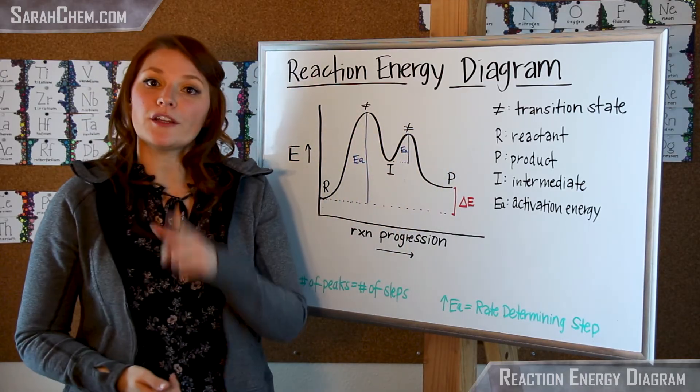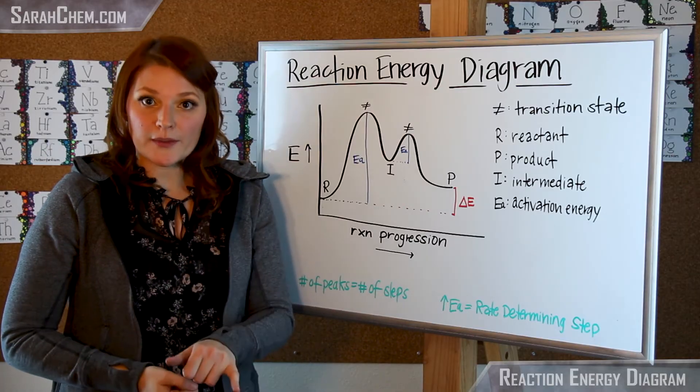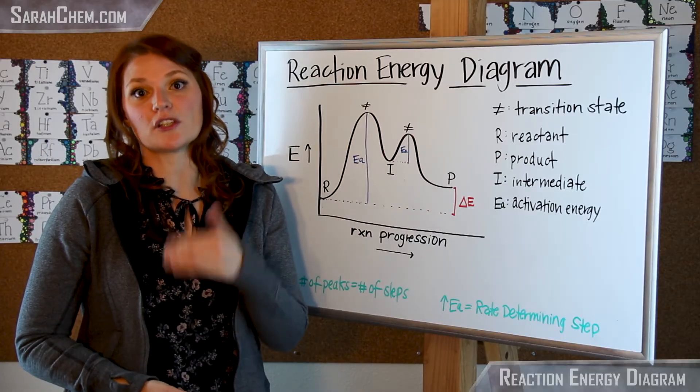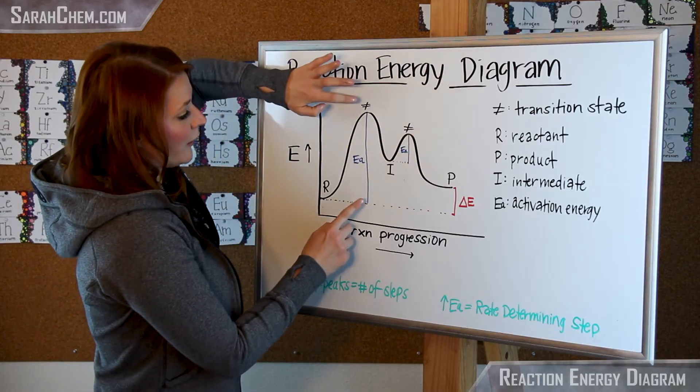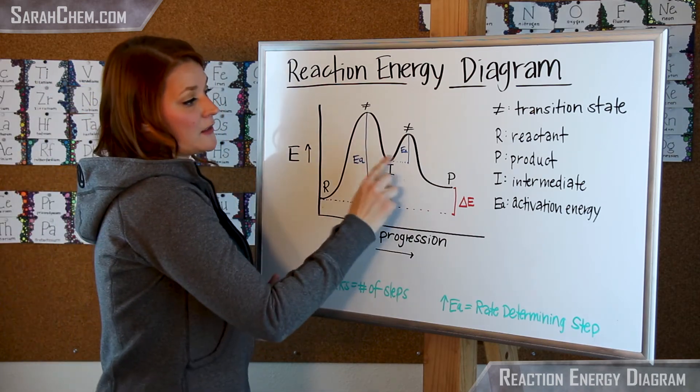Based on this, you can figure out which one is the rate determining step. That's going to be the slowest step, and it will be the slowest because it has the highest activation energy barrier. So this here would be our rate determining step because it has a much higher barrier to get over than does this one here.